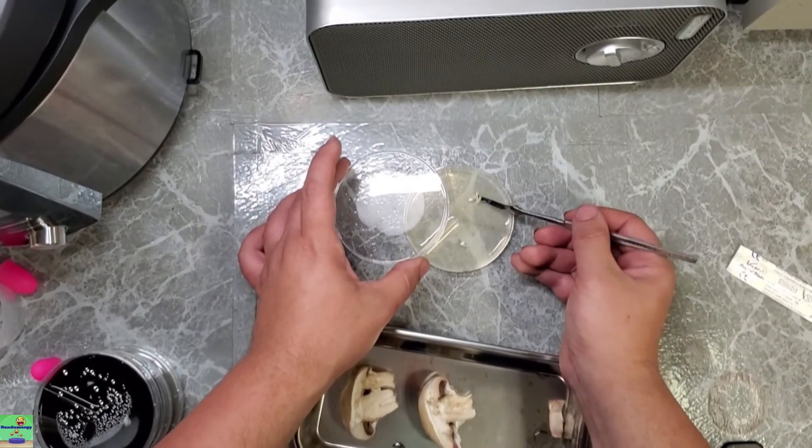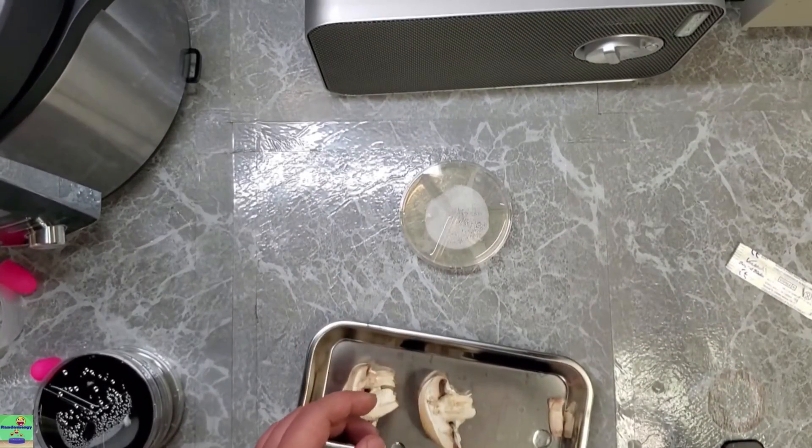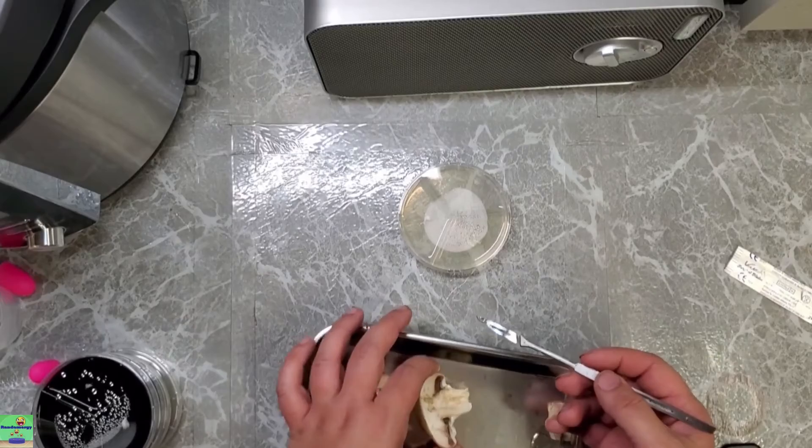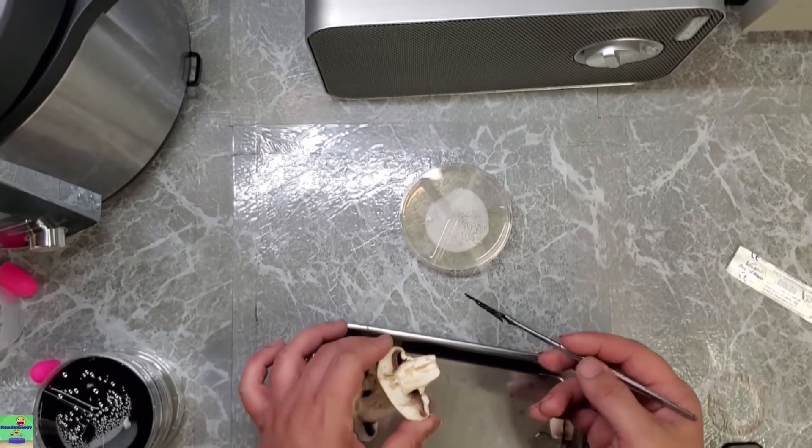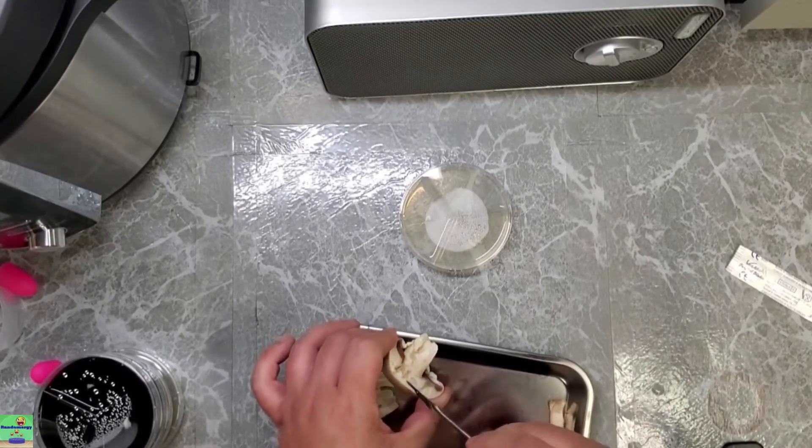I don't need much. The smaller the better as far as inoculated sample size goes. It's mostly because the smaller your sample, the less likely you are to get contamination. Last one for Agaricus bisporus. Letting this cool. One more little sample here.